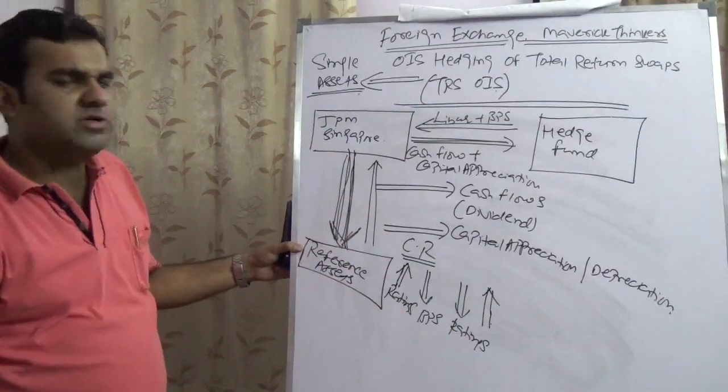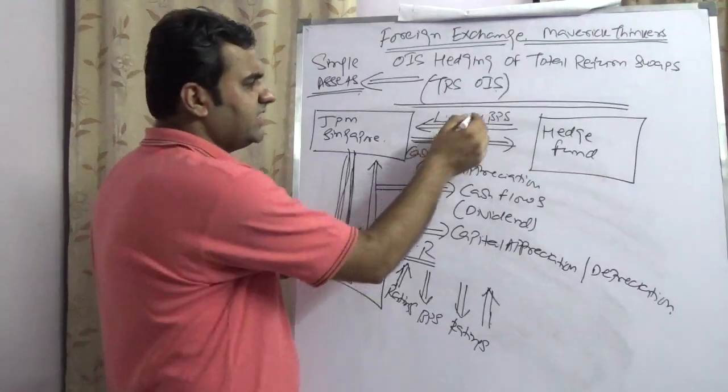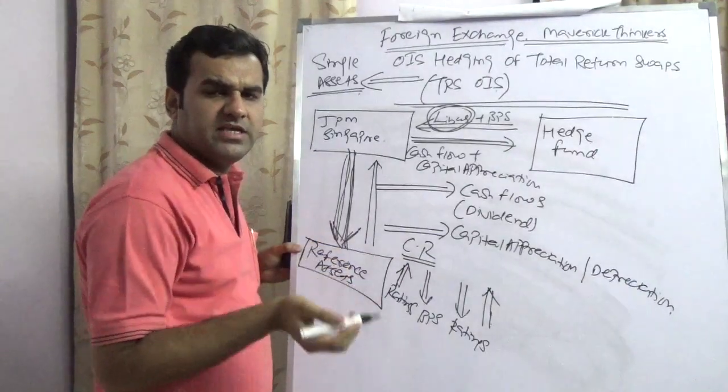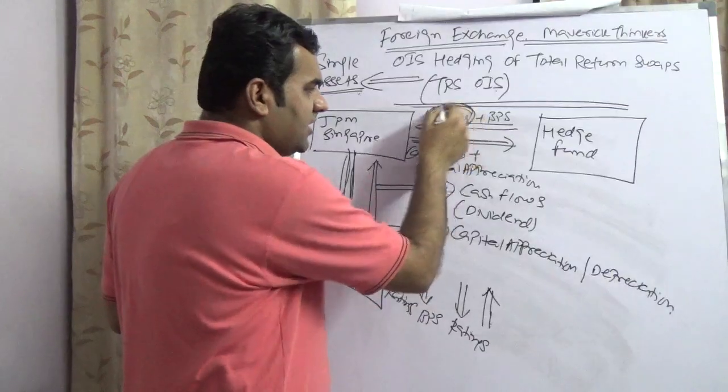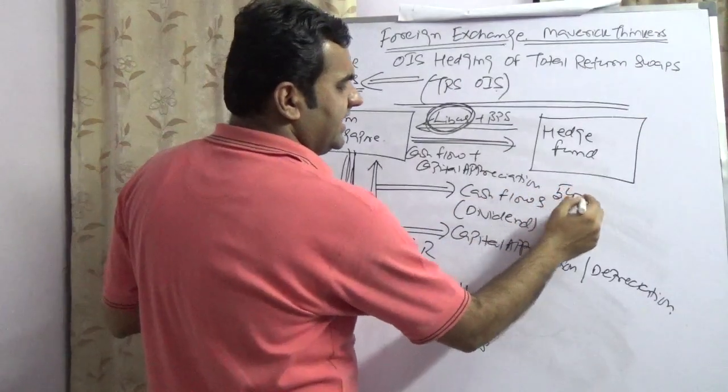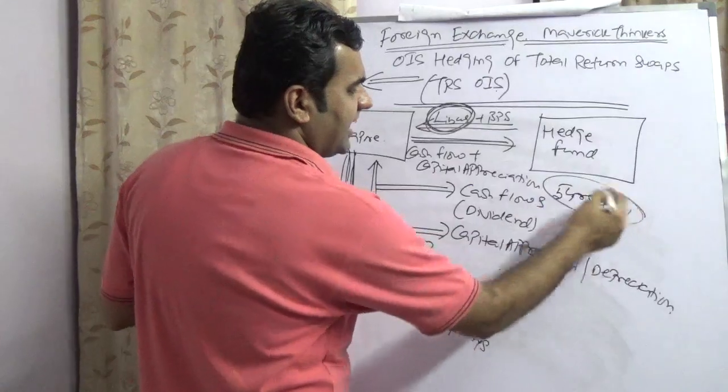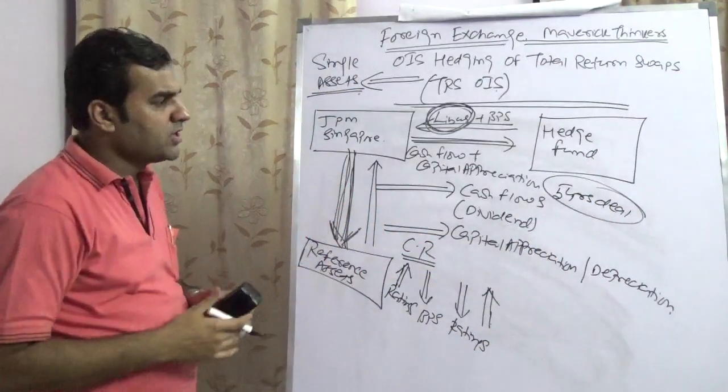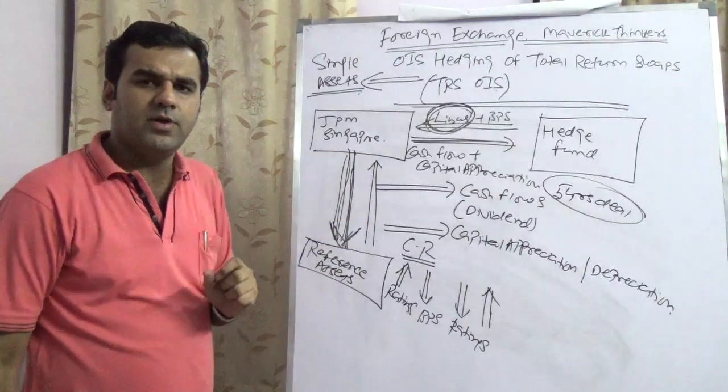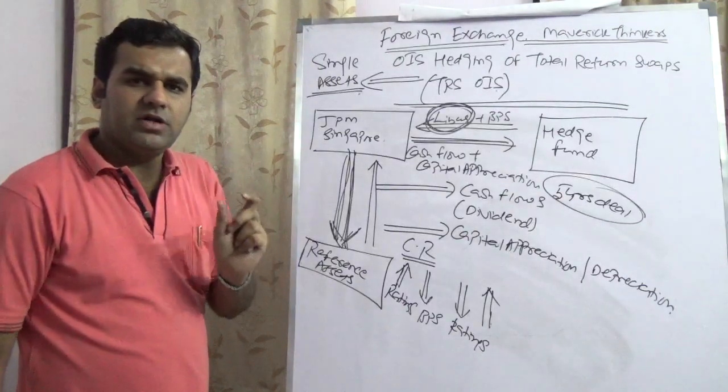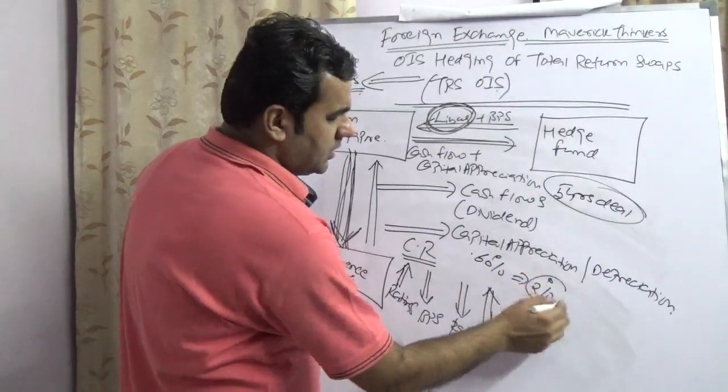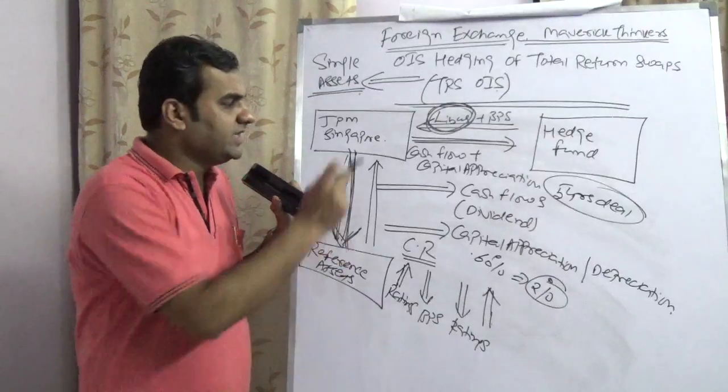In this, hedge fund is taking a risk known as interest rate risk. This is a LIBOR risk because he is paying LIBOR. He wants to cap that risk because what would happen if LIBOR would shoot up? Assuming this is a five-year deal, every year they have to pay. This hedge fund would pay LIBOR plus a few basis points to JP Morgan Singapore. Assuming one-year LIBOR, which is currently trading at 0.6%, shoots up to 2%, hedge fund would be in a loss and that party would be in a gain.